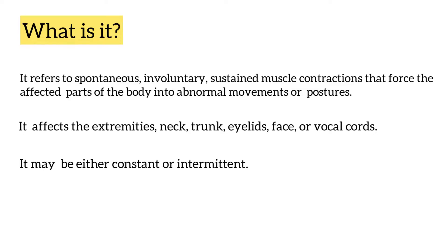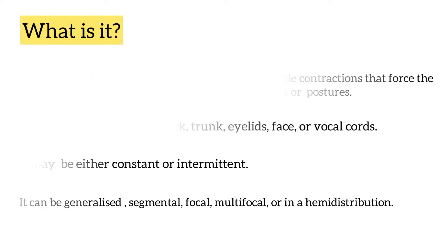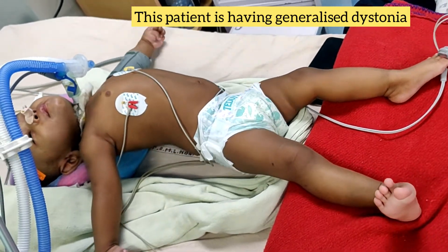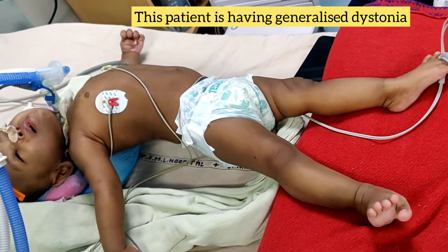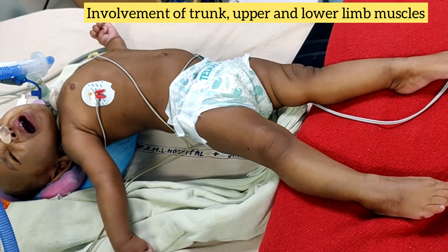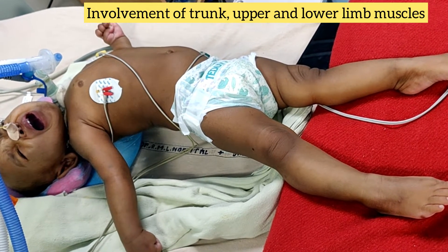It may be either constant or intermittent. It can be generalized, segmental, focal, multifocal, or in a hemi distribution. Observe this patient — he has generalized dystonia. There is involvement of trunk, upper and lower limb muscles.